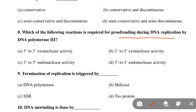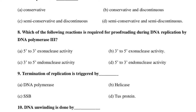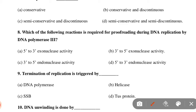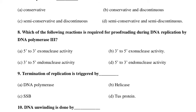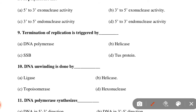Next MCQ: Which of the following reactions is required for proofreading during DNA replication by DNA polymerase III? Option A: 5' to 3' exonuclease activity, Option B: 3' to 5' exonuclease activity, Option C: 3' to 5' endonuclease activity, Option D: 5' to 3' endonuclease activity. Option B is correct — 3' to 5' exonuclease activity. Next MCQ: Termination of replication is triggered by — DNA polymerase, helicase, SSB, or Tus protein? Tus protein (terminus utilization substance) is the correct option.